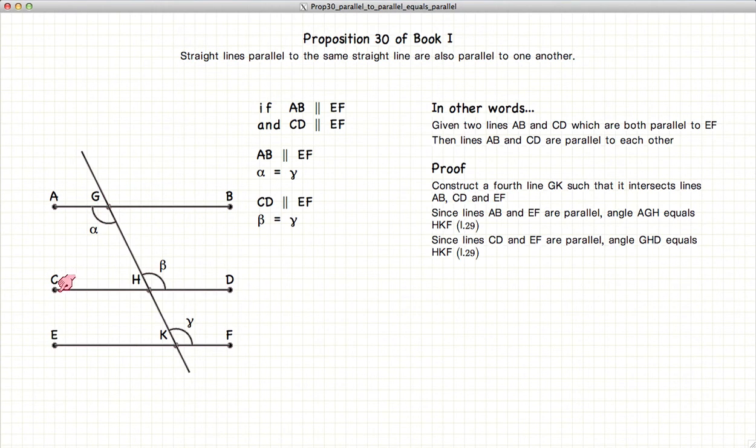By the same token, since line CD is parallel to line EF, angle GHD (beta) equals HKF (gamma). So beta equals gamma.